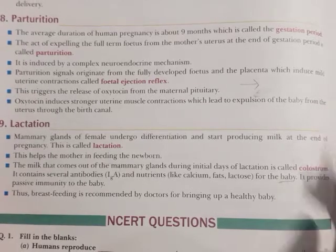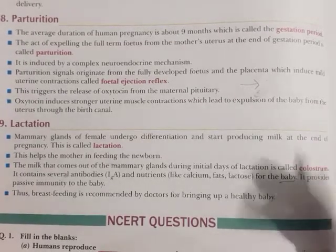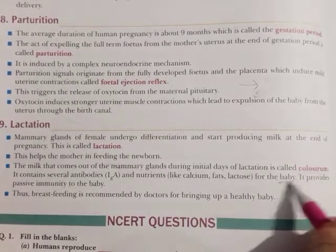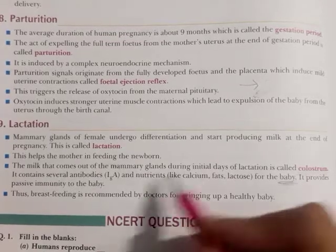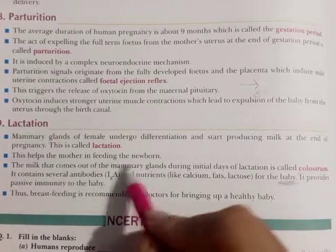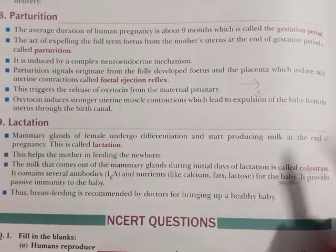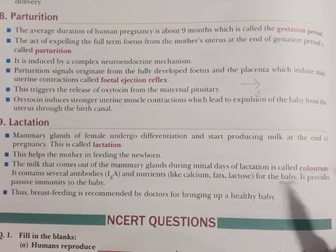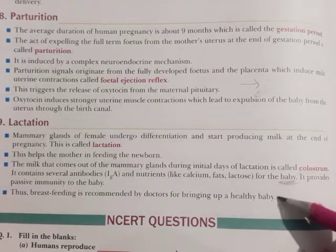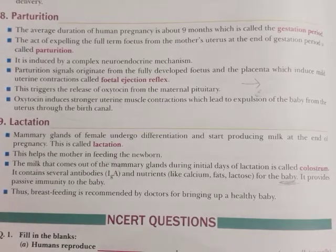If antibodies are formed within the baby's own body, it is called active immunity. But since the IgA antibodies are transferred directly from the mother's colostrum to the baby's body, we call this passive immunity.